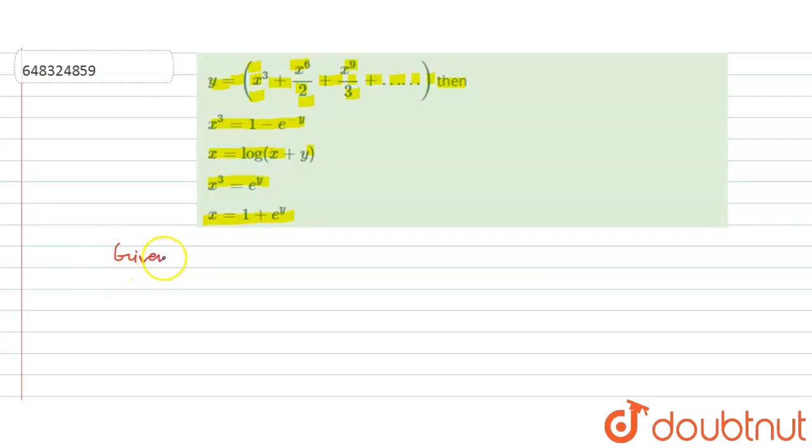So starting with the given part, what is given to us? y equals x cubed plus x to power 6 by 2 plus x to the power 9 by 3, and we have added this term to the infinite number of terms.